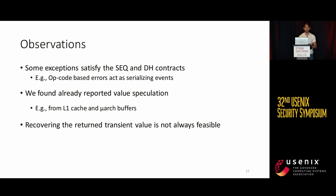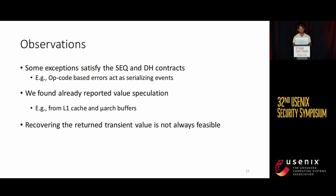Some observations from our evaluation are that some exceptions act as serializing events, so they don't enable speculation. We found previously reported value speculation — for example, forwarding from the L1 cache or from different architectural buffers. A key observation is that for some exceptions, like divide error, division overflow, or division by zero, we cannot really infer the value which the CPU returns and uses in the transient execution.